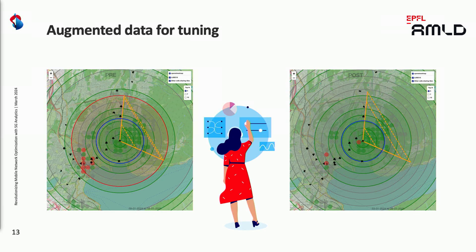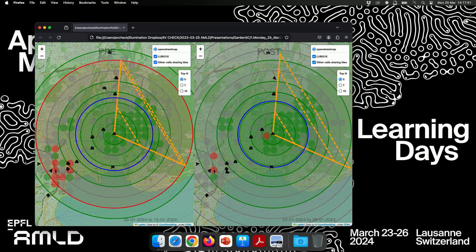The second use case — augmented data. You have similar charts, starting with a given cell, in this case a 5G cell, with red dots where it's not working well. We provide this to experts, pre-enriched with information on which cells could be problematic. They make some adjustments and then we provide both the pre and post views to see the impact of the changes made.